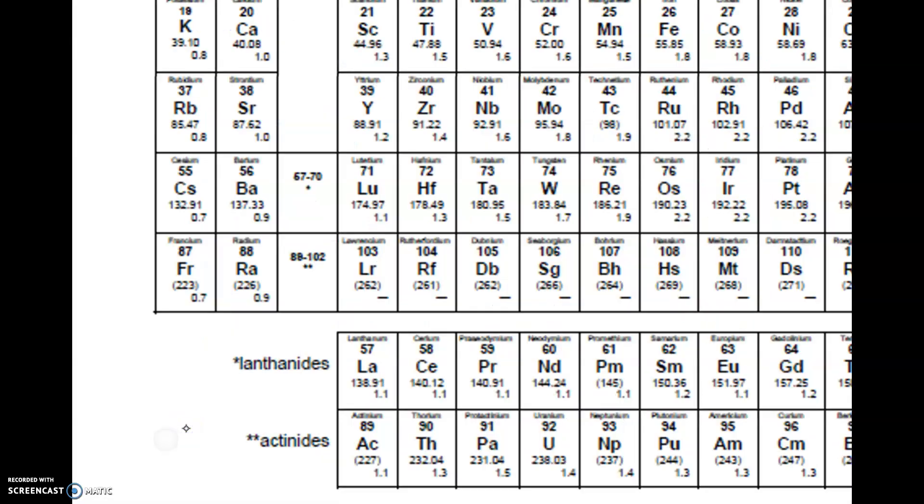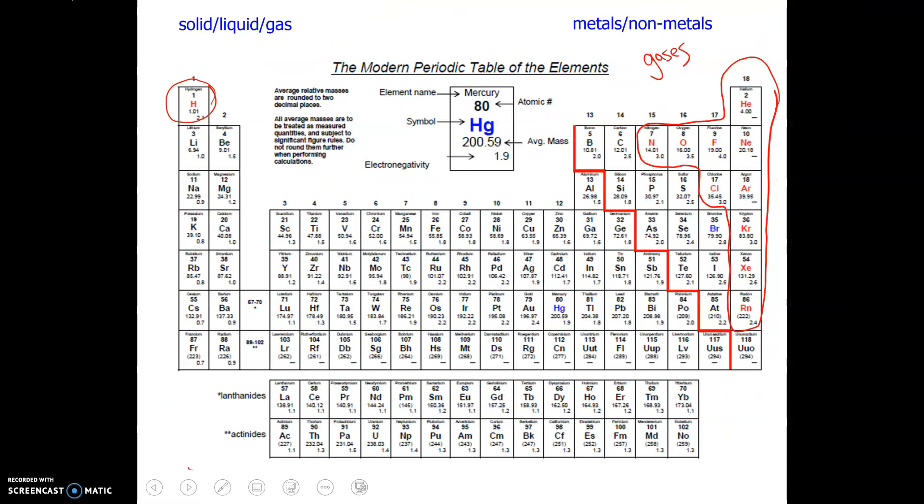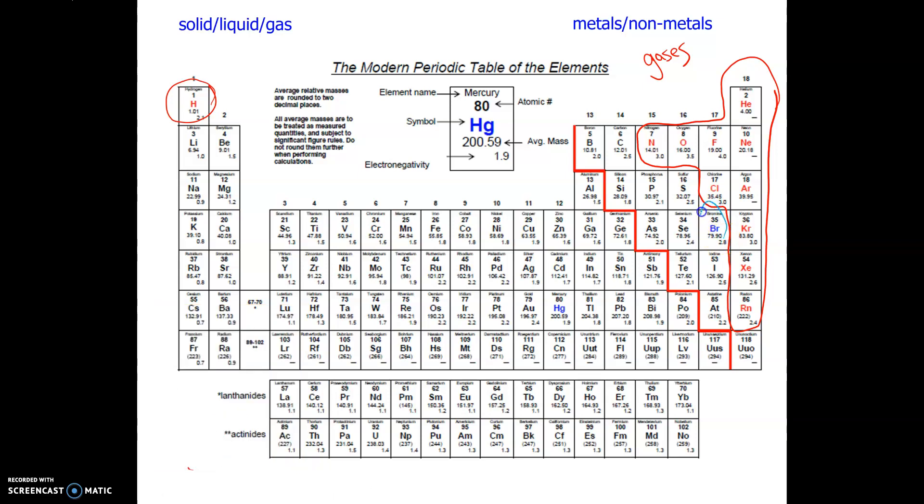And then any elements that are in blue are liquids. So there are two here, so I'm just going to circle them. We got bromine and we got mercury, so they are liquids at room temperature.